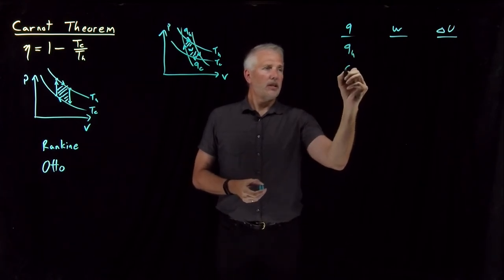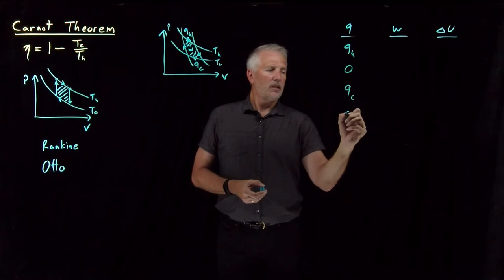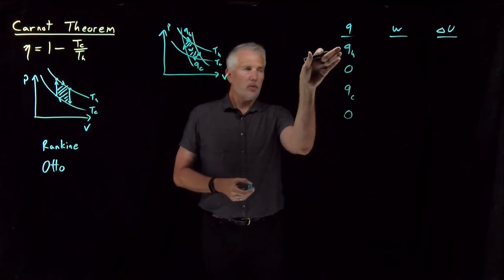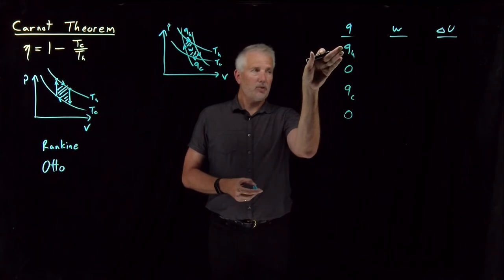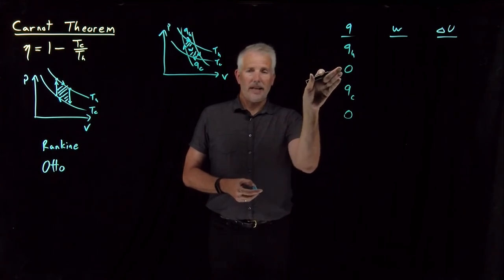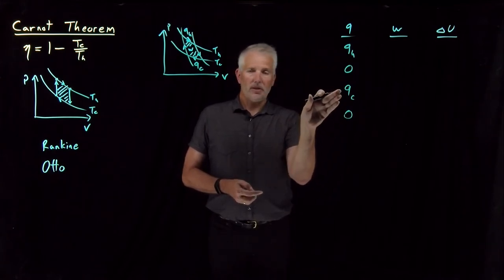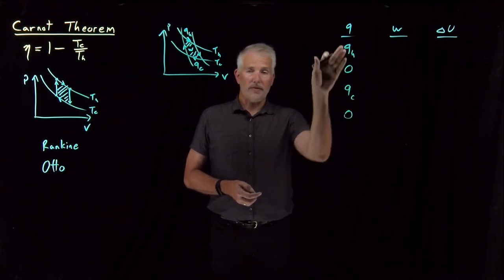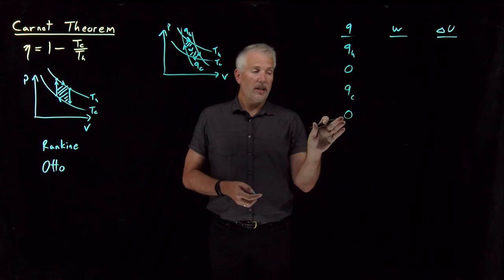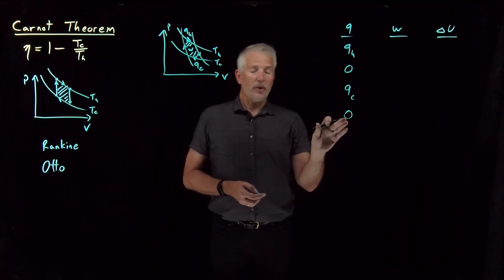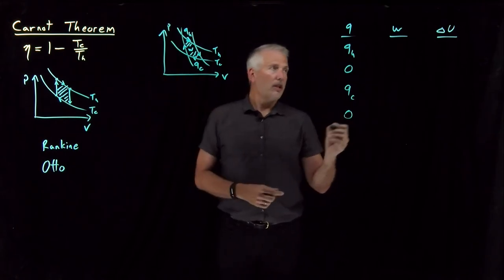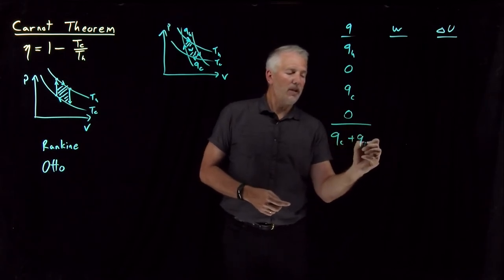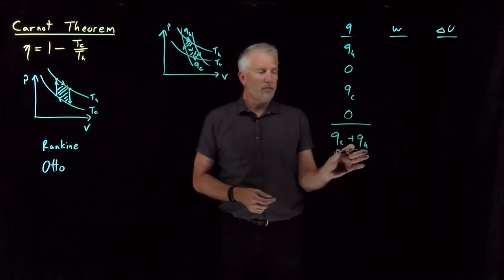So we had, in step number one, reversible isothermal expansion, absorbed some heat, adiabatic expansion, there was no heat, isothermal compression, we gave some heat back to the surroundings. So these two terms have opposite signs from each other, and then no heat in the final adiabatic expansion. Adding those up, there was some net amount of heat from that process.